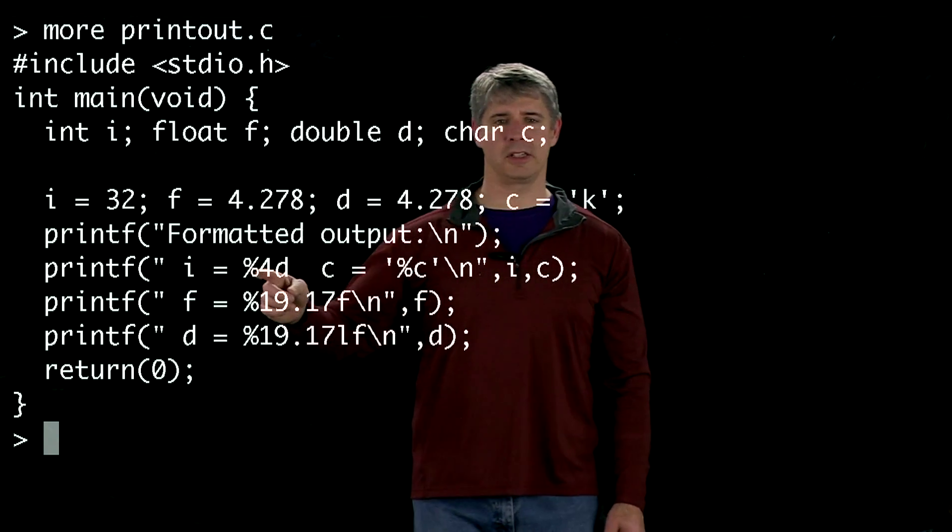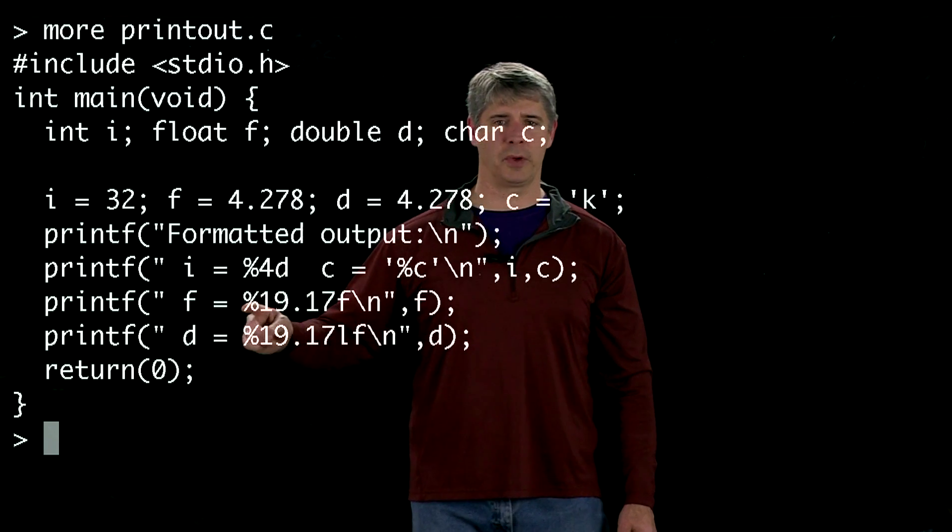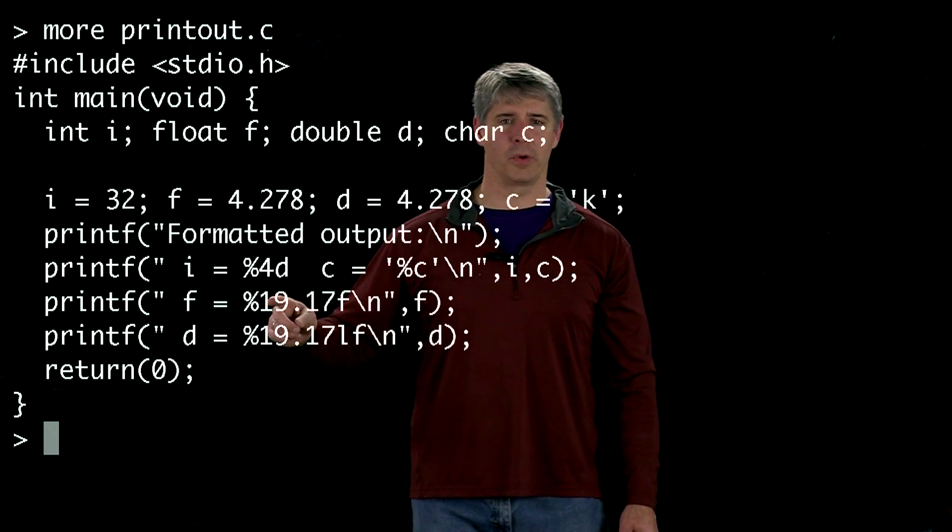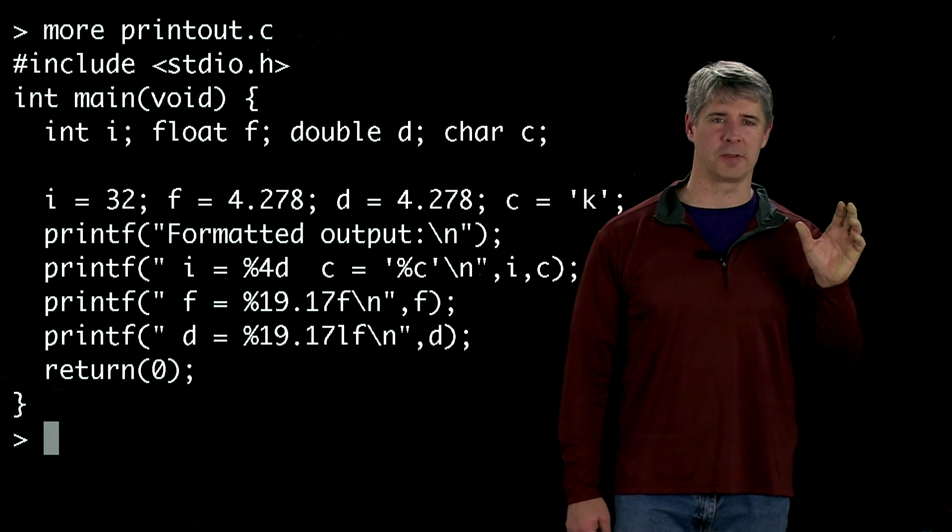So just like you see here that it's going to allocate four spaces to print this integer. Down here, when we print this floating point number, we're going to use 19 spaces, and 17 of them are going to come after the decimal point.